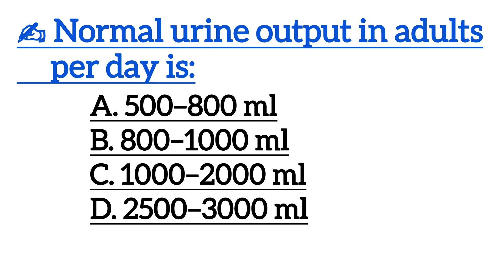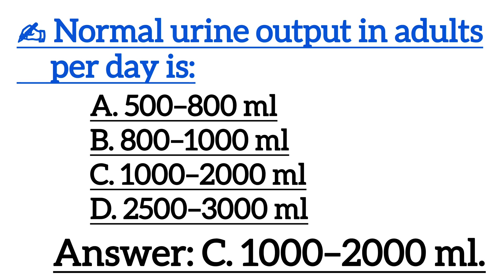The normal urine output in adults per day is — correct answer is option C: 1,000 to 2,000 ml.